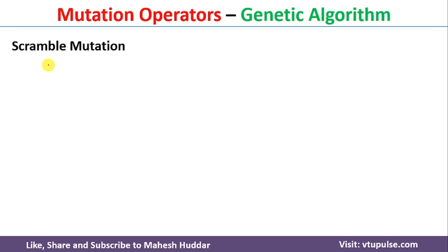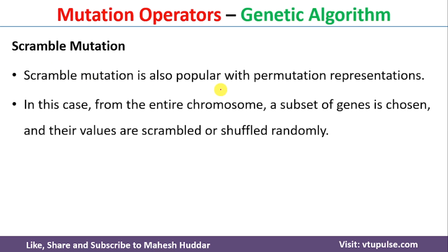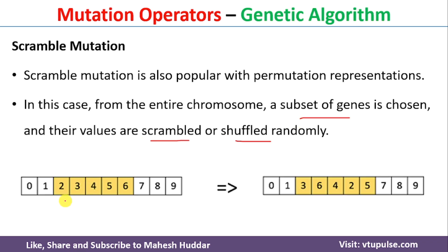The fourth mutation operator is Scramble mutation. In this case, we select a subset of genes from the chromosome rather than just two — we may select one, two, or multiple genes. Once those genes are selected, their values are scrambled or shuffled randomly in the new chromosome. For example, with five genes selected having values 2, 3, 4, 5, and 6, after applying Scramble mutation the values are shuffled: 2 is replaced with 3, 3 with 6, 4 with 4, 5 with 2, and 6 with 5. That is how the Scramble mutation operator works.